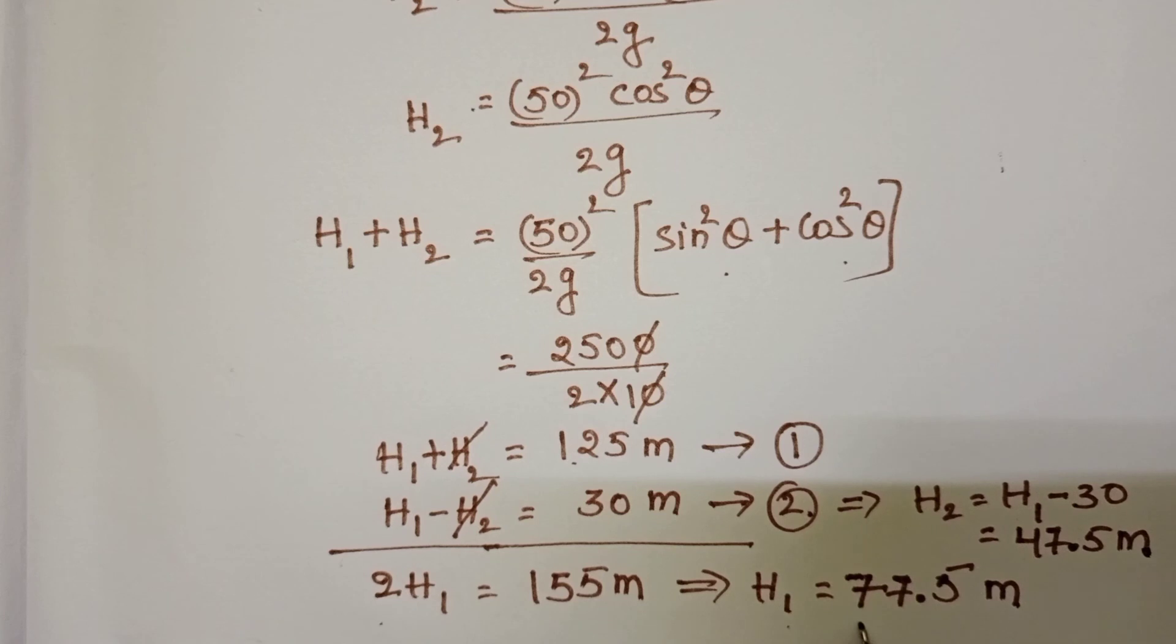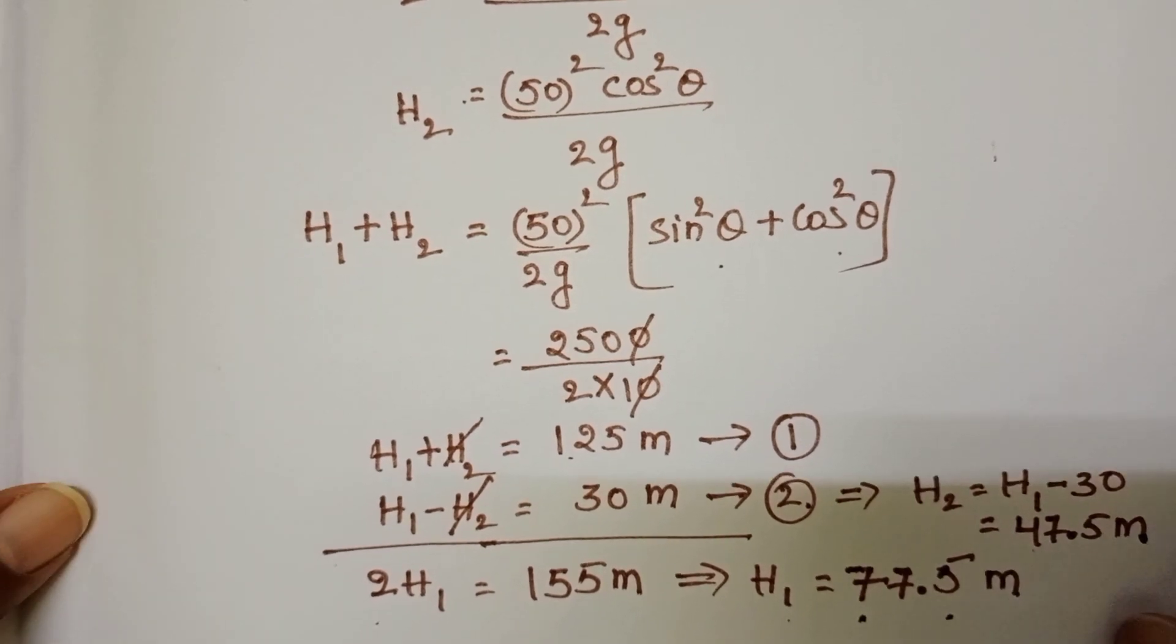So maximum height is 77.5 meters and minimum height is 47.5 meters. Check the given options.